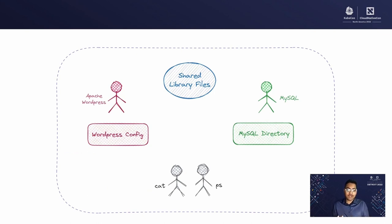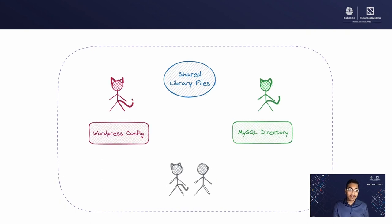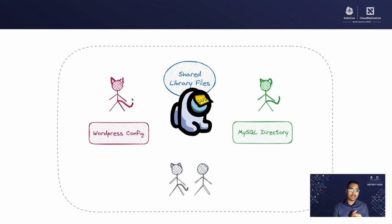Let's take this analogy back to containers. We have a WordPress app and a MySQL app — they each have their own configurations and directories. They need shared libraries to function, and then we have cat, ps, and other maintenance binaries. Apache WordPress should only be able to access the WordPress config, and MySQL should only access the MySQL directory. But if they try to access something else, or the files are accessed by unexpected binaries, we know something malicious is happening. We can restrict our containers to prevent them from performing actions like these.